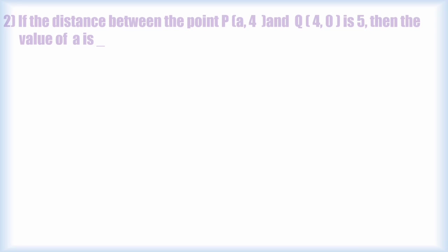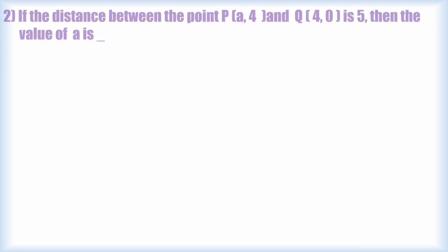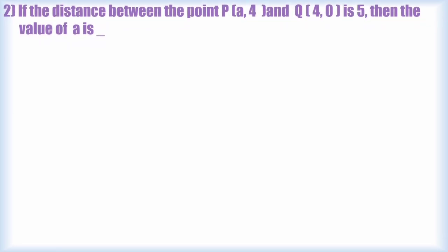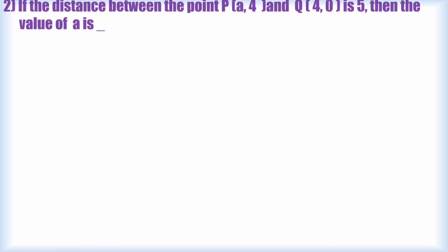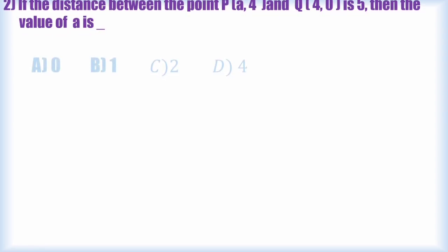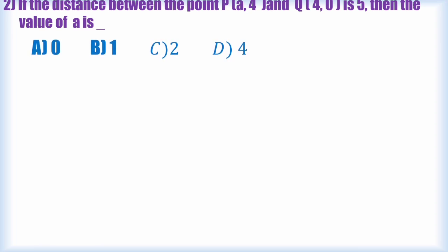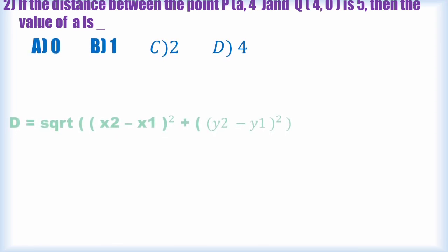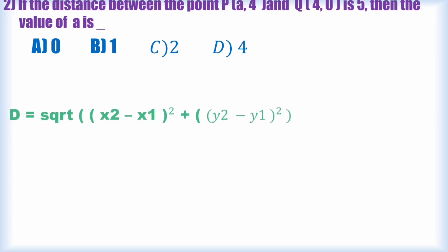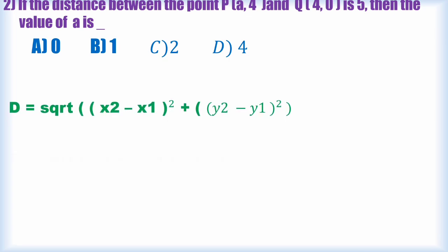Second question: the distance between point P(a, 4) and Q(4, 0) is 5. We need to find the value of a, which is the x-coordinate of P. Using the distance formula between two points (x₁, y₁) and (x₂, y₂).